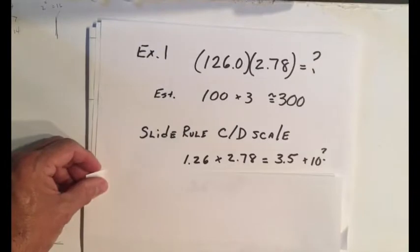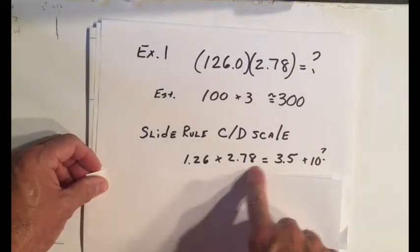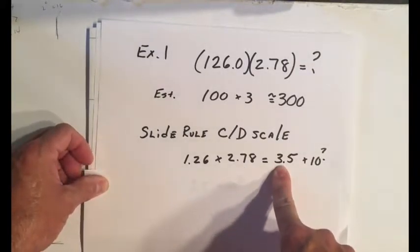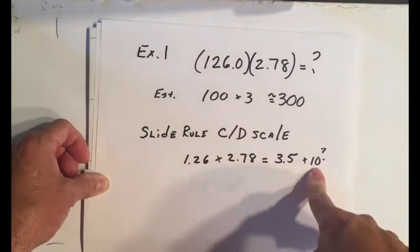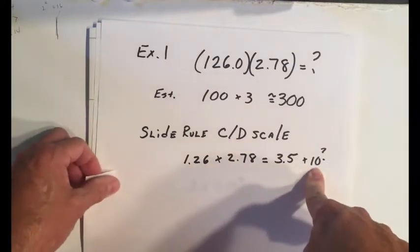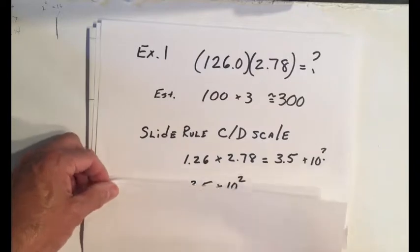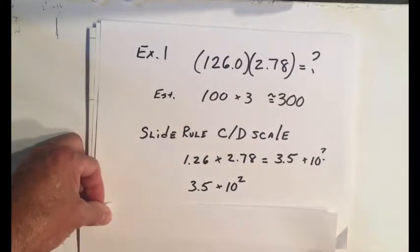So we know that if we do this on a C and D scale, we get 3.5. And then the big question is, which is not so hard for this one, what is the exponent on your scientific scale? Obviously it's going to be times 10 to the 2, 3.5 times 10 to the 2.